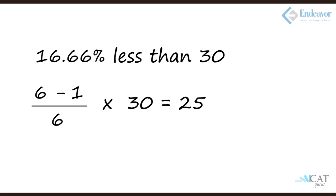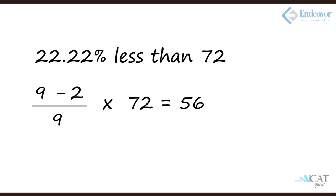Let's look at another example: 22.22% less than 72. 22.22% we haven't come across, but we have come across 11.11%, so this is double that, so it will become 2 upon 9. Now that much is lesser, so it will be 9 minus 2 upon 9, which is 7 upon 9. 72 into 7 upon 9 will be 8 into 7, which is 56. This is how we can easily calculate a lot of other things.